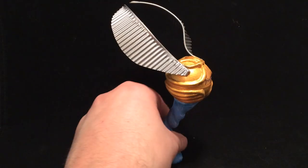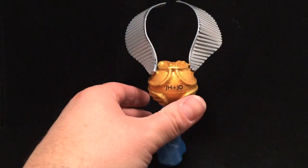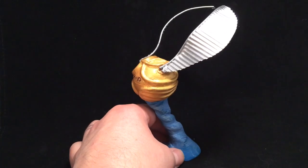The snitch itself is sculpted. The initials that you see here, the J-H and J-O, are the client's initials and his girlfriend's initials.